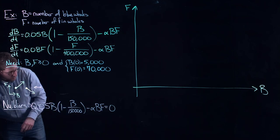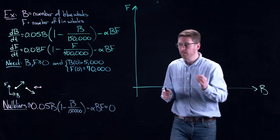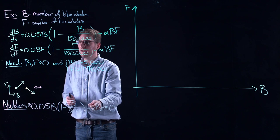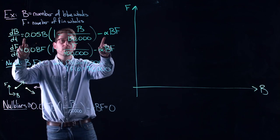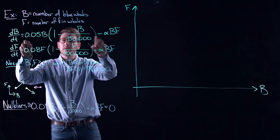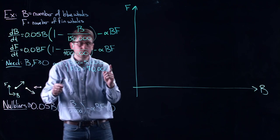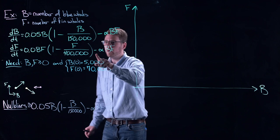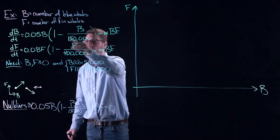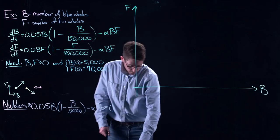So what does that represent? Let's think about this geometrically first. Every point on this set is going to represent a point where the blue whale population is not changing. That means that my vectors at each point on this line are going to be purely vertical. They're either pointing positively in the F direction or negatively in the F direction. They have no B component because B is equal to zero.